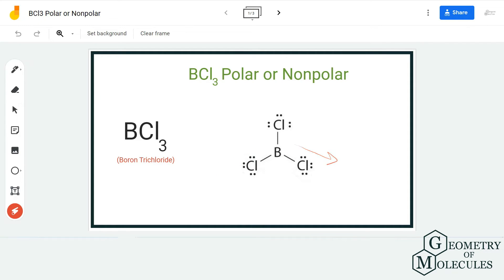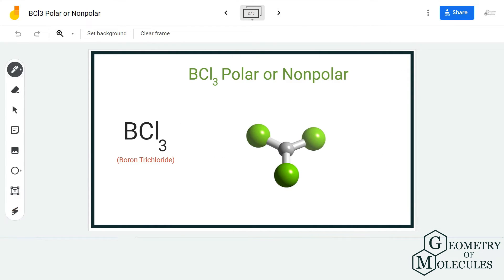They are placed as far as possible from each other to avoid any repulsive forces among bonding pairs of electrons. The molecule is quite symmetrical because all the chlorine atoms are placed at equal distances from each other.